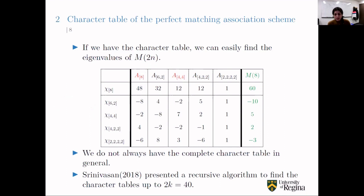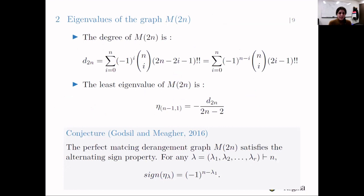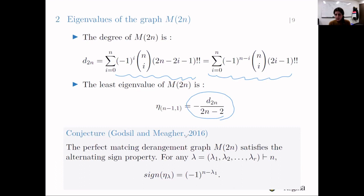We don't always have the complete character table; the most recent result has the complete character table up to 2k = 40. So we need to find other techniques to find eigenvalues. We already know the degree and the least eigenvalue of the derangement graph, as shown by Karen and Chris in their 2017 work. The degree equals a certain summation, and the least eigenvalue is the negative of the degree divided by (2n-2). Using these, they proved the ratio bound equality.